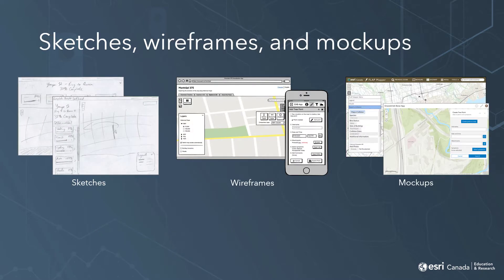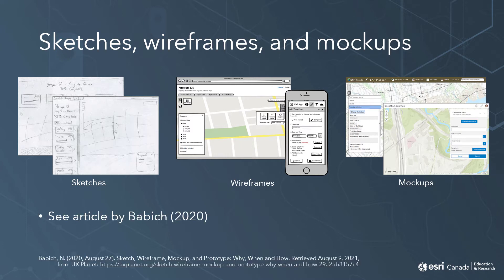Related to this, we also have sketches, wireframes, and mockups, which are created at different points in the design process and can be turned into prototypes. There's sometimes a bit of overlap with how these terms are used, but there's a useful article from UX writer Nick Babich that defines everything in a way that matches the consensus — you can find this at the link in the video description. Sketches, wireframes, and mockups all have different levels of visual fidelity, which refers to how similar they look to the finished design. The level of fidelity you use depends on what you're trying to figure out, communicate, or test throughout the design process.